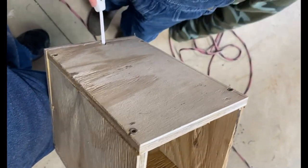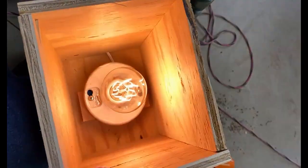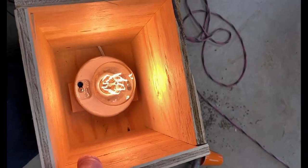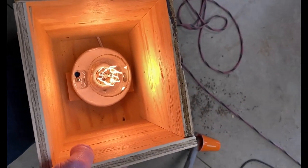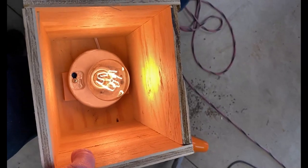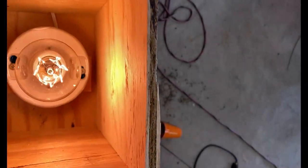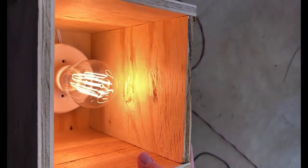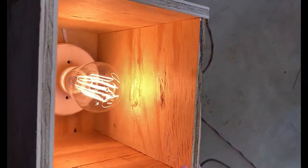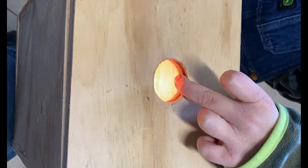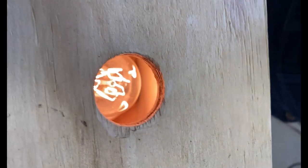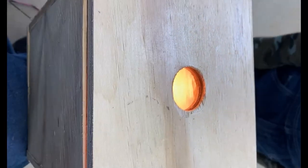All right, so here's our completed candler. Go ahead and turn it on. All right, so we're going to use a much brighter bulb. That's just to test it out, but everything's working right. So go get the top over there, Lincoln. All right, so that goes on top, and now we're going to set the egg on top of there, again with a much brighter light bulb.